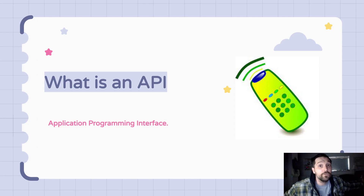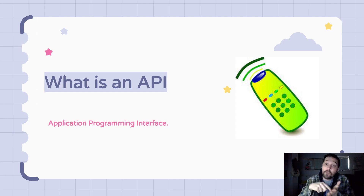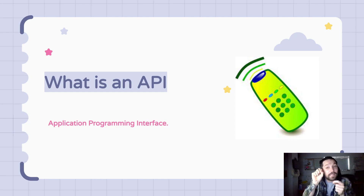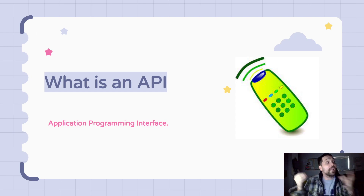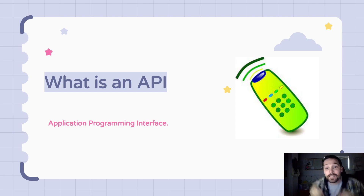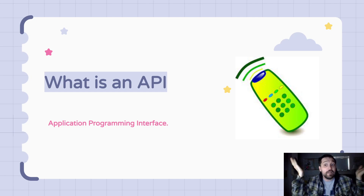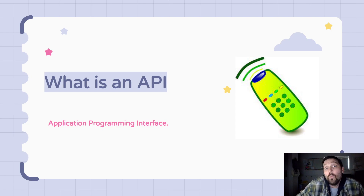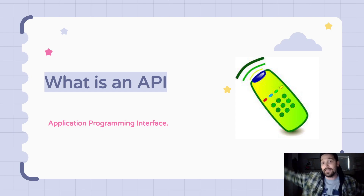I have two different types of remotes in my house. One uses an infrared beam — it sends a light-based Morse code-like message that must be pointed directly at the TV. Another one in my house is connected via Bluetooth, so I can change the channel from the bathroom. I don't know how it works, and I don't need to know, because all I need is to hit the button and have the volume go up or down. That's an API.